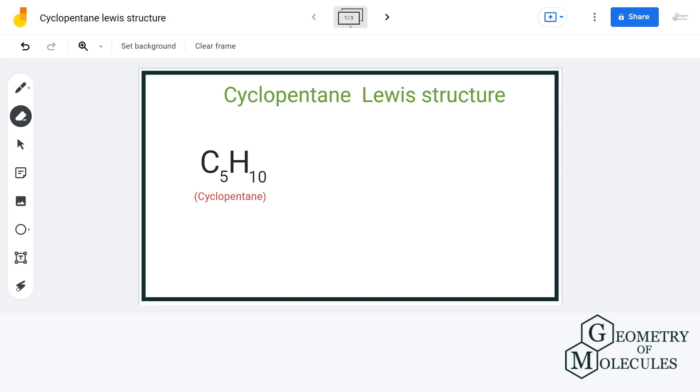Hi guys, welcome back to our channel. In this video we will discuss the Lewis structure of cyclopentane, which has a chemical formula of C5H10. For that, let us count the total number of valence electrons. We have 5 carbon atoms having four valence electrons and 10 hydrogen atoms having one valence electron.